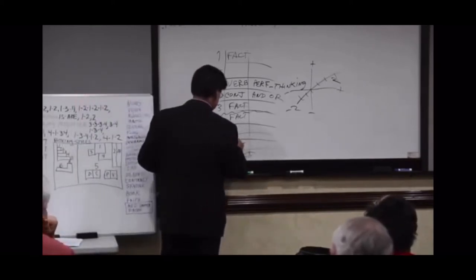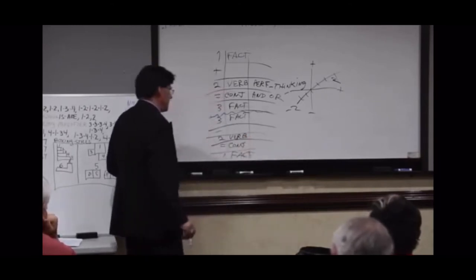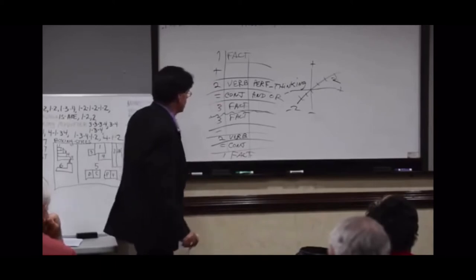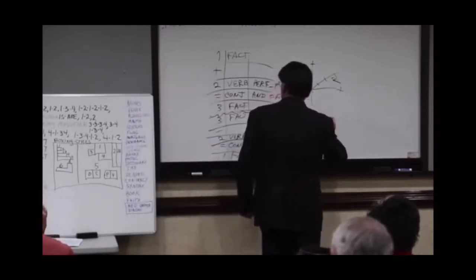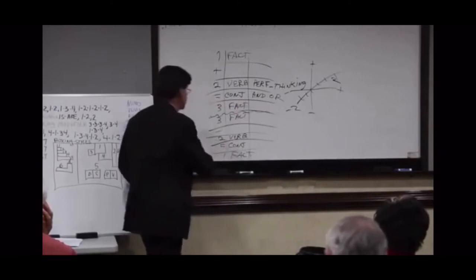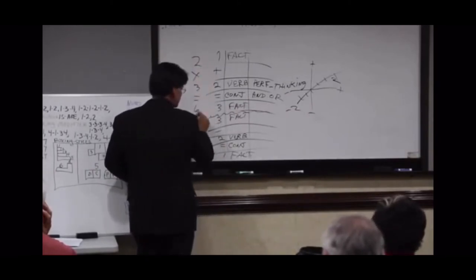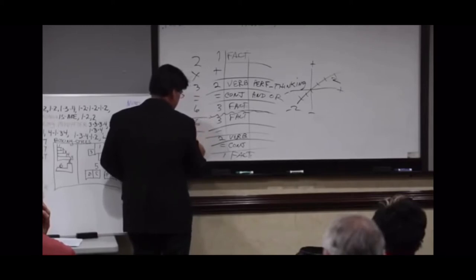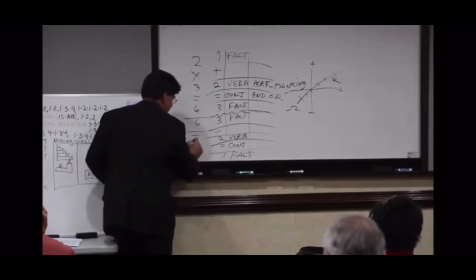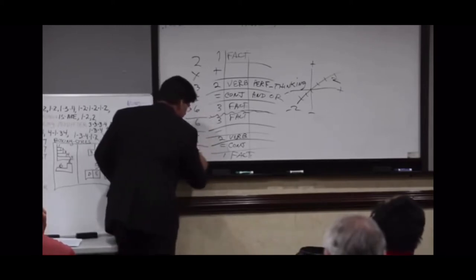So you've got a verb on both sides here. Now you have a plus and a minus. 1 plus 2 equals 3. 3 minus 2 equals 1. 2 times 3 equals 6. 6 divided by 3 equals 2.